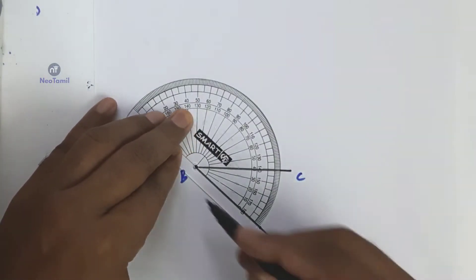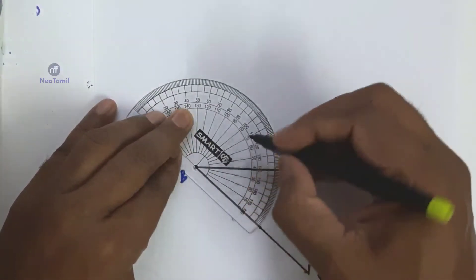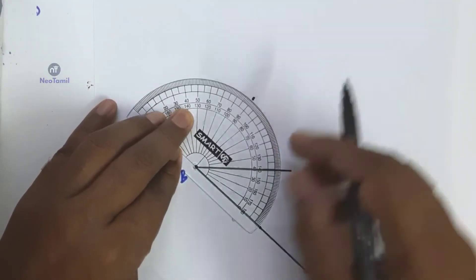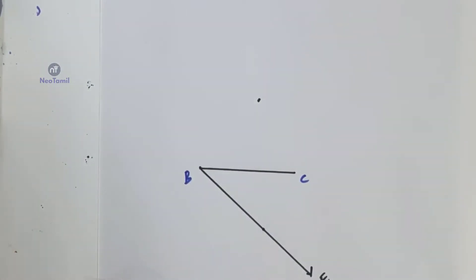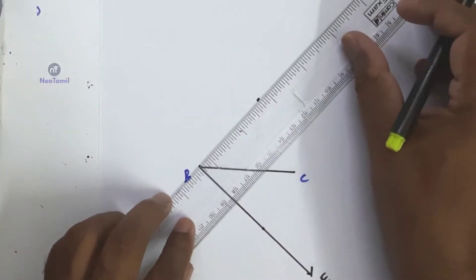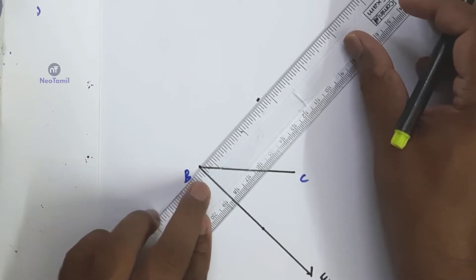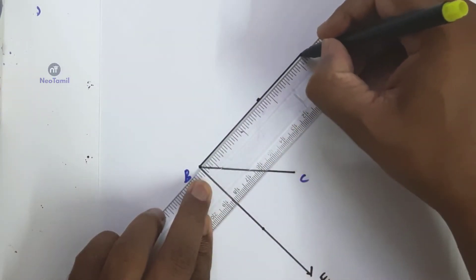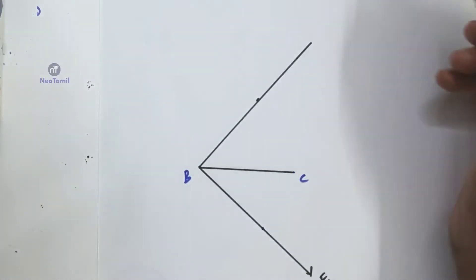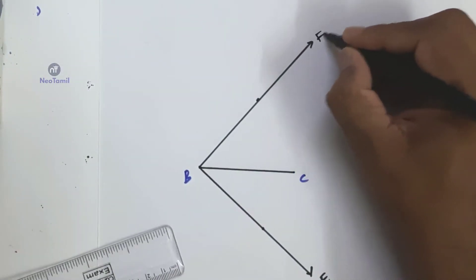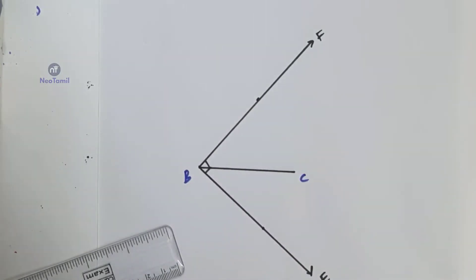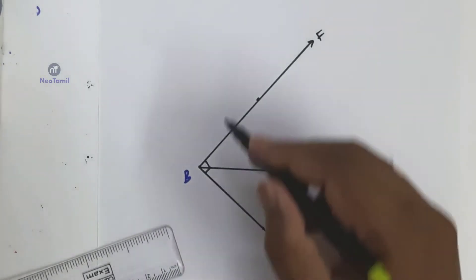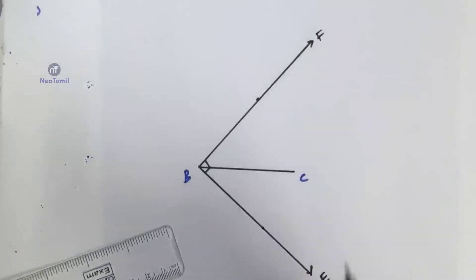With the protractor, draw another ray at B: angle EBF equal to 90 degrees.